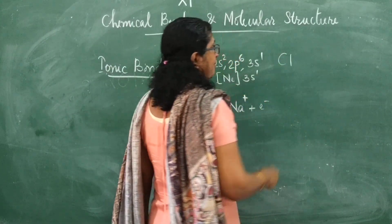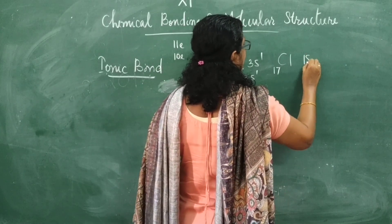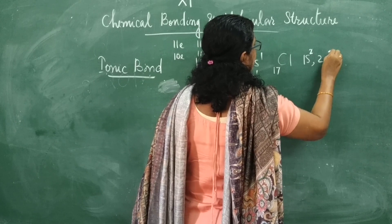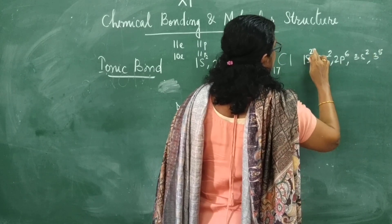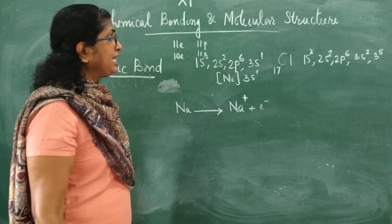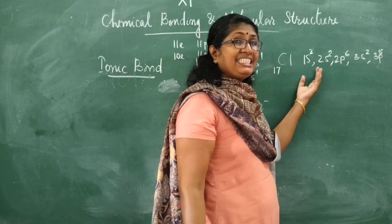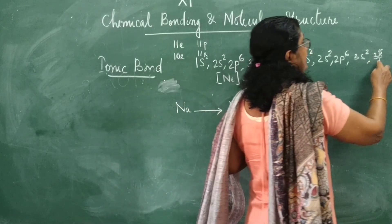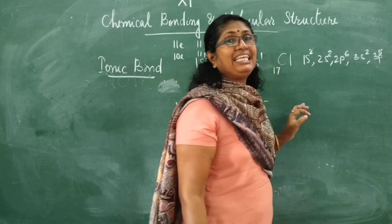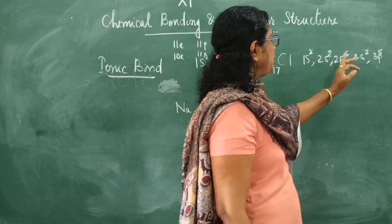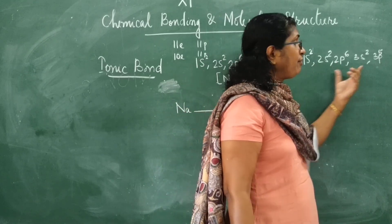Chlorine has atomic number 17, so it has 17 electrons with configuration 1s², 2s², 2p⁶, 3s², 3p⁵. If chlorine gains one electron, it will have 3p⁶ configuration — the configuration of argon, the next inert gas: 1s², 2s², 2p⁶, 3s², 3p⁶. So chlorine will always try to gain one electron.